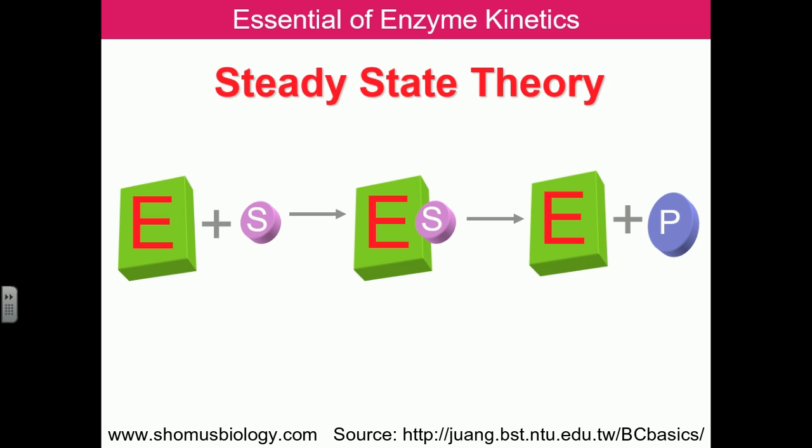The speed of building the enzyme-substrate complex is very important for determining the rate of the reaction, and this speed is also determined by the presence and concentration of the substrate. Michaelis and Menten proposed that the enzyme-substrate complex will remain constant regardless of how much substrate is added or how it is converted to product.